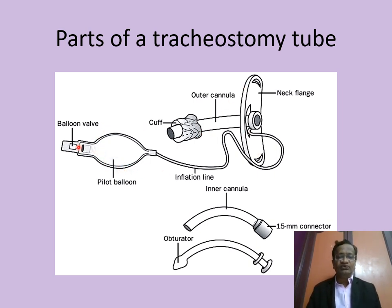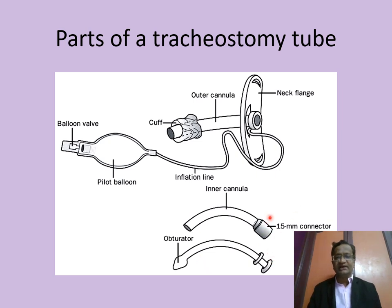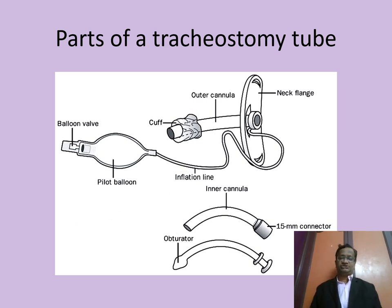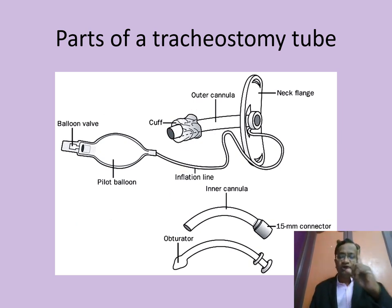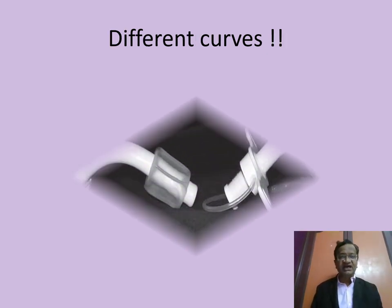Parts of the tracheostomy tube include: the outer cannula, the neck flange, the pilot balloon, the balloon valve, the inflation channel, the cuff, and the inner cannula which goes inside. Remove the obturator and connect the 15 mm connector to start ventilating. There are mono-cannula and dual-cannula tubes with different curves to suit the patient.